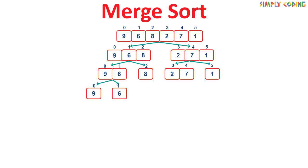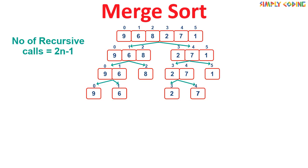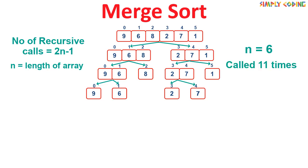The right-hand side is split into [2, 7] and [1]. Next, [2, 7] is split into [2] and [7]. This completes the recursive process as all array elements are broken down into one element, and each is individually sorted. The number of times the recursive function is called is 2n - 1, where n is the number of elements. Since n is 6, the recursive function is called 11 times.